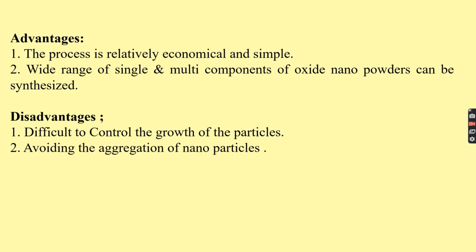The precipitation method is very simple and relatively economical. A wide range of single and multi-component oxide nanopowders can be synthesized by this method. The main disadvantage is that it is difficult to control the growth of the particles; continuous stirring is required to keep particles small. During the process, inclusion of some larger particles may also be observed. Controlling particle growth and avoiding aggregation of nanoparticles is difficult.